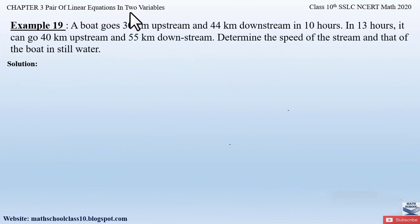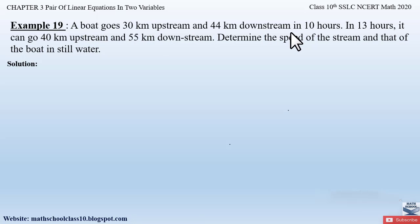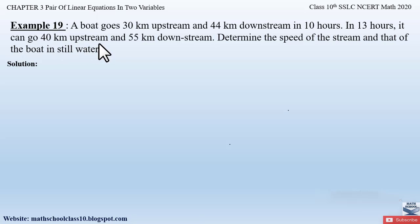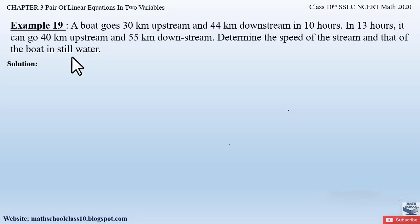Example 19 from chapter 3, pair of linear equations in two variables says: a boat goes 30 kilometers upstream and 44 kilometers downstream in 10 hours. In 13 hours it can go 40 kilometers upstream and 55 kilometers downstream. Determine the speed of the stream and that of the boat in still water.